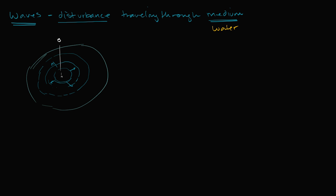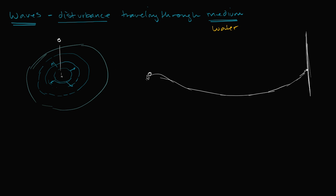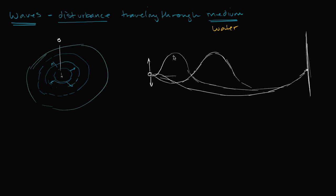We can give other examples. If I were to take a really long string and hold it, with the string attached to a wall — and right now there's some slack in it — and I were to start moving my hand up and down just once, what I'm going to have is this lump of string move from the left to the right. A few seconds later it's going to look like this, and you're going to have this disturbance — this wave, this lump that I just generated — move to the right. The medium in this case is the string.